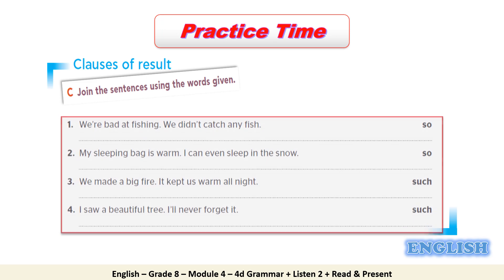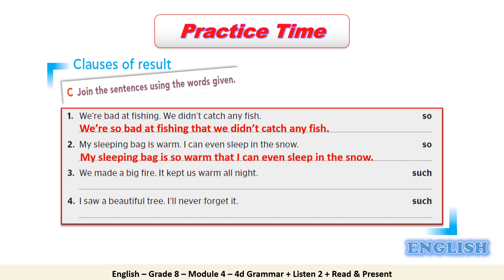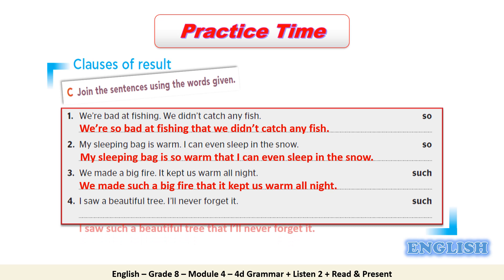Now join the sentences using the words given. Number 1: We are so bad at fishing that we didn't catch any fish — use 'so' before the adjective 'bad', drop the period and use 'that'. Number 2: My sleeping bag is so warm that I can't even sleep in the snow. Number 3: We made such a big fire that it kept us warm all night — use 'such' before the article 'a'. Number 4: I saw such a beautiful tree that I will never forget it.